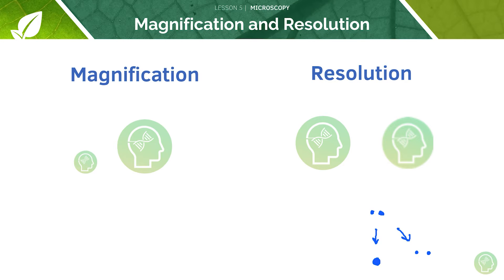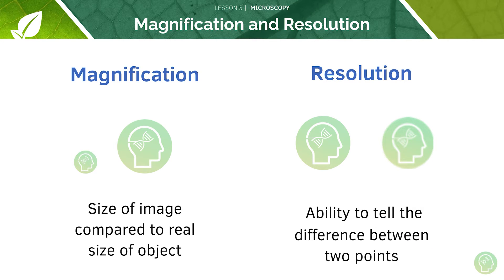That's just an example, and if you were to look at it in terms of an image, you can see that one image is a lot blurrier than the other. Now let's contrast that to magnification. Magnification is the size of the image compared to the real size of the object. So let's say this is the object — it has been magnified to create this image. Magnification tells you how big an image is compared to the real object.